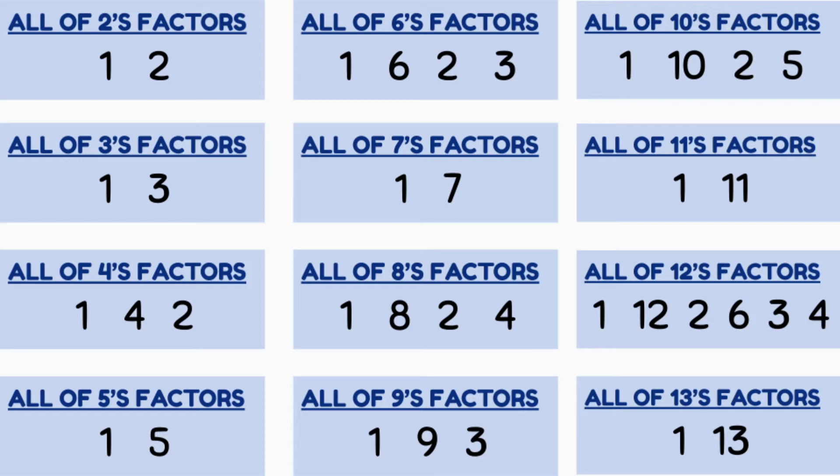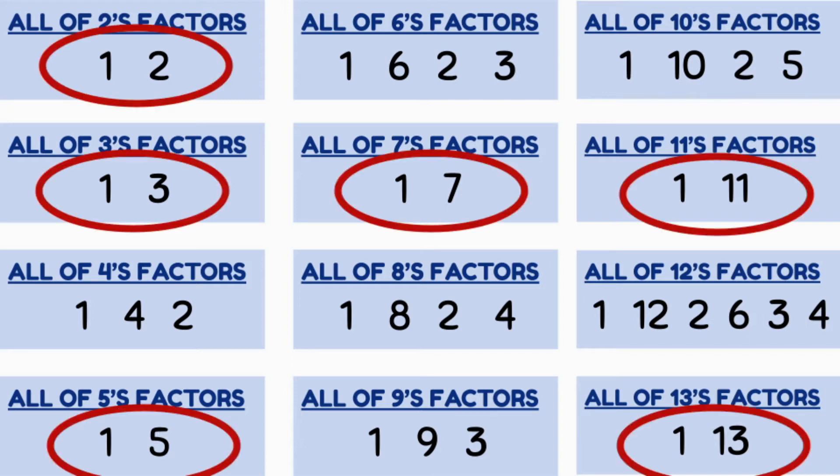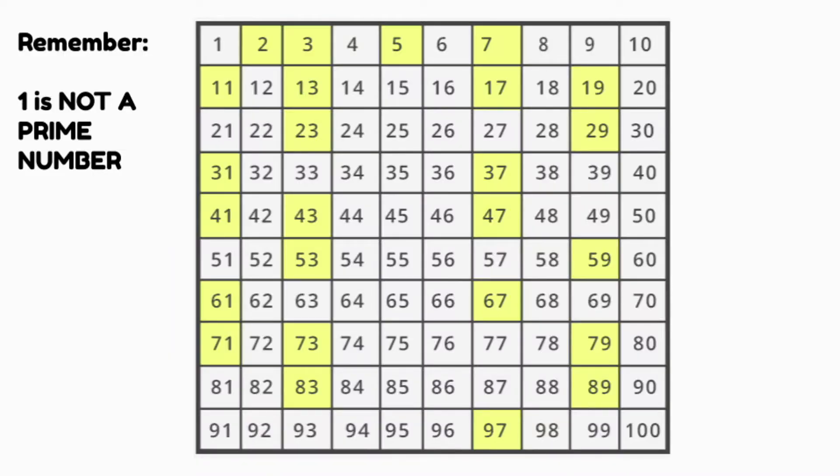We can see that there are many numbers which only have two factors. Here we can see that 2, 3, 5, 7, 11, and 13 all only have two factors, which are always themselves and one. We can take a look at this chart and see all the numbers up to 100 that only have two factors, themselves and one.